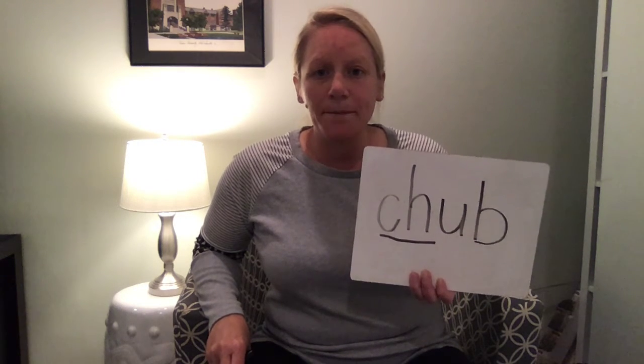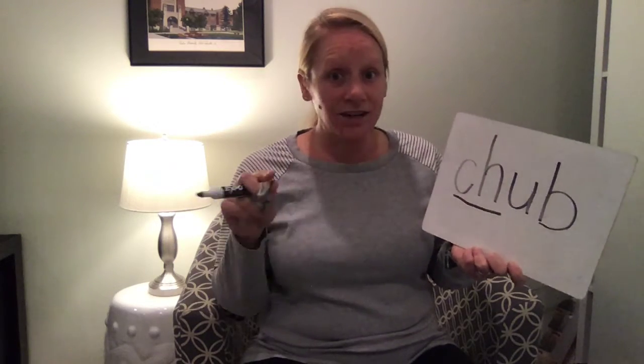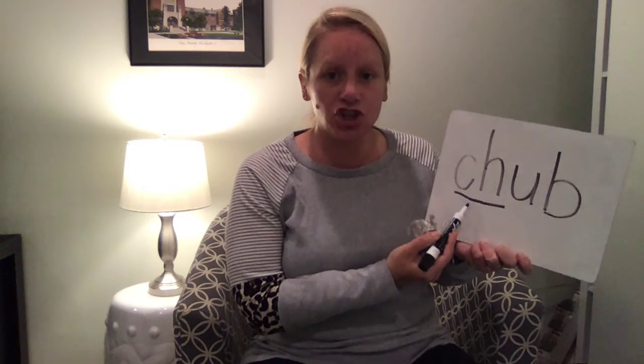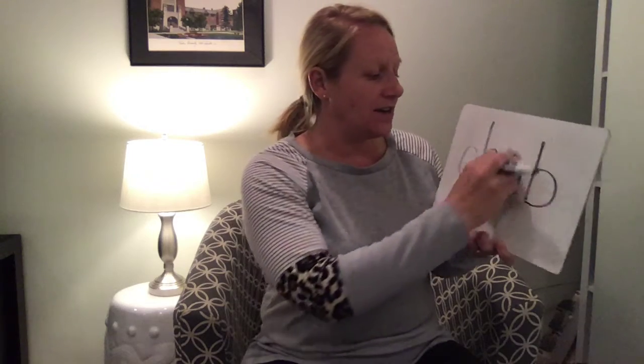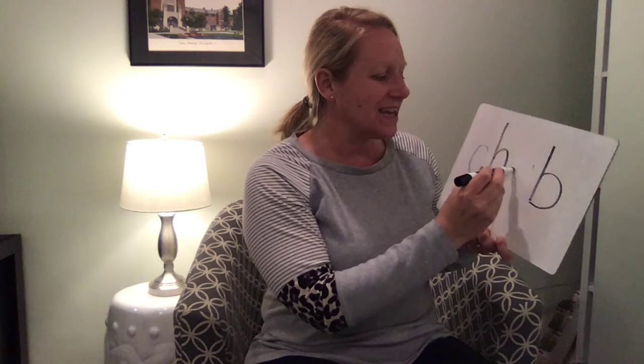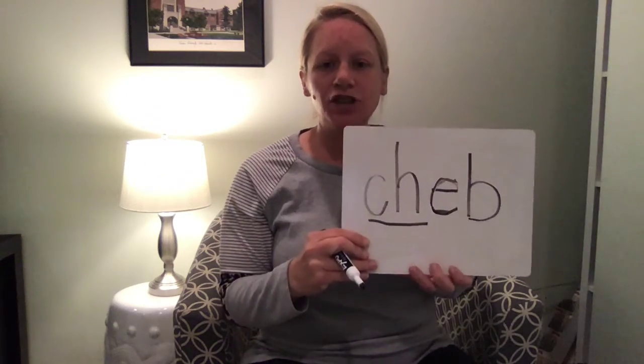The next word I want you to make is cheb. What's the same? What's different? Go ahead and write your word. What digraph do you hear? What other parts of the word do you hear? Be ready in three, two, one. Cheb — ch. I felt my tongue drop — it moved — and the air stopped. So this is the correct digraph at the beginning: ch. Then let's look at the next letter — eh. That needs a different letter. Ch — eh — b. Cheb. Check your cheb with mine.